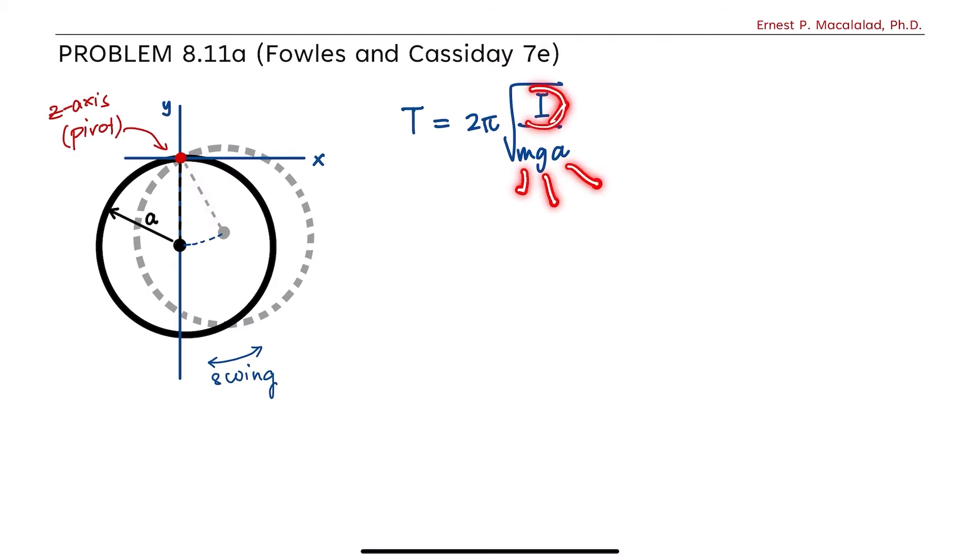Therefore, we need to find the moment of inertia of this object rotated about the z-axis. So we know that the moment of inertia of a circular loop about an axis passing through its center and normal to its plane is equal to ma². And by parallel axis theorem,